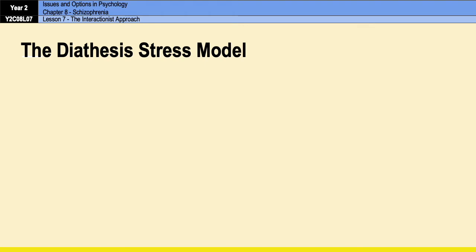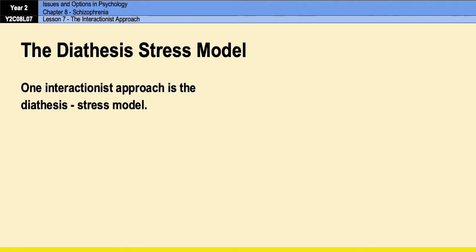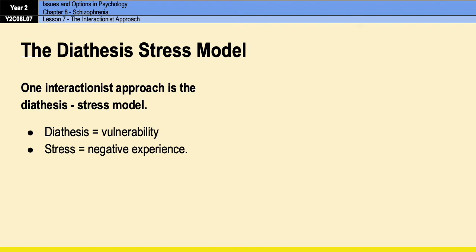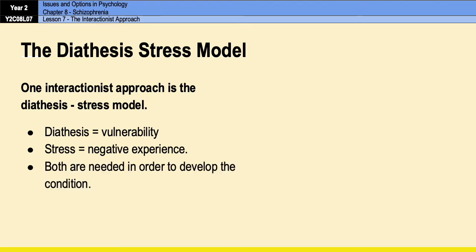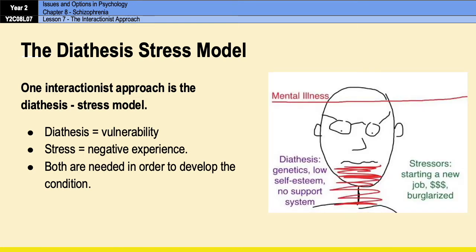One particular model that uses an interactionist approach is called the diathesis-stress model. Diathesis means vulnerability, and in this context stress refers to a negative experience of some kind. The model effectively says that the development of mental illness is the result of an underlying vulnerability to a particular condition being triggered by a stressor. Both the pre-existing vulnerability and the negative experience are needed for the condition to be triggered.